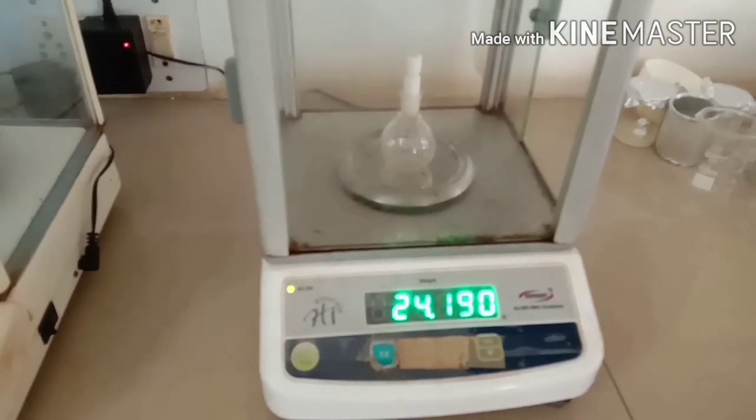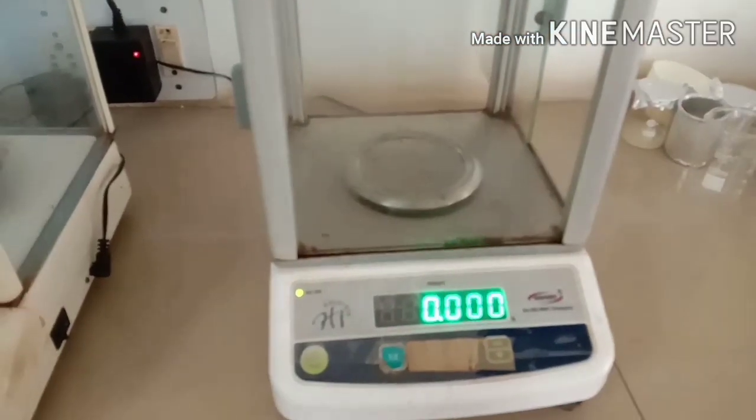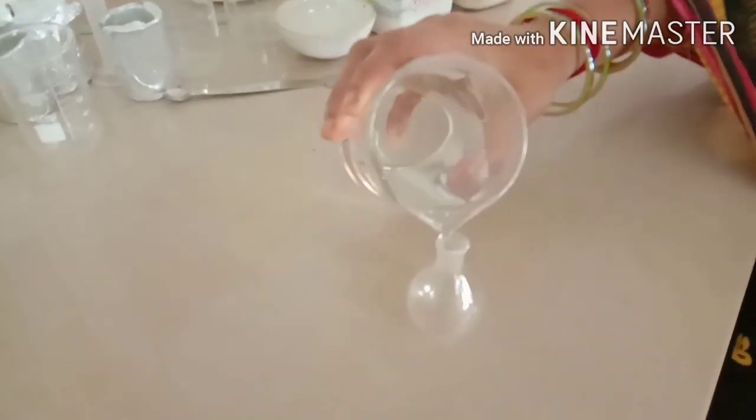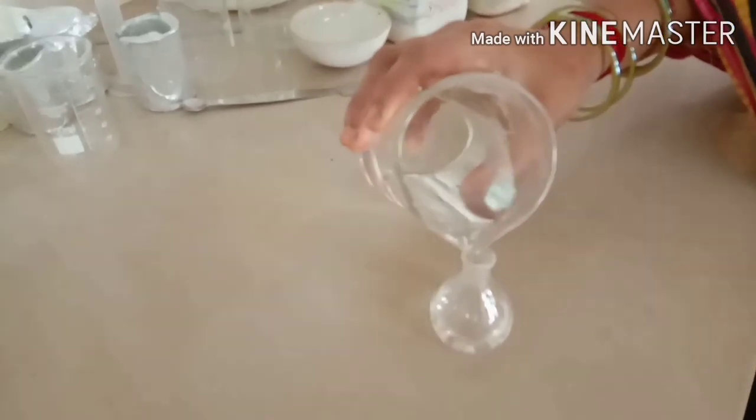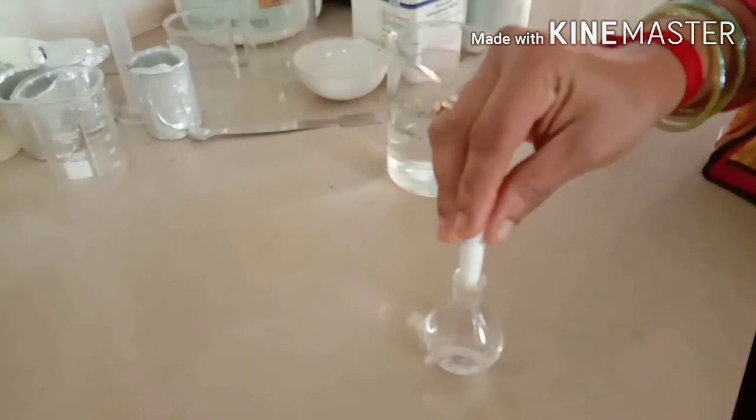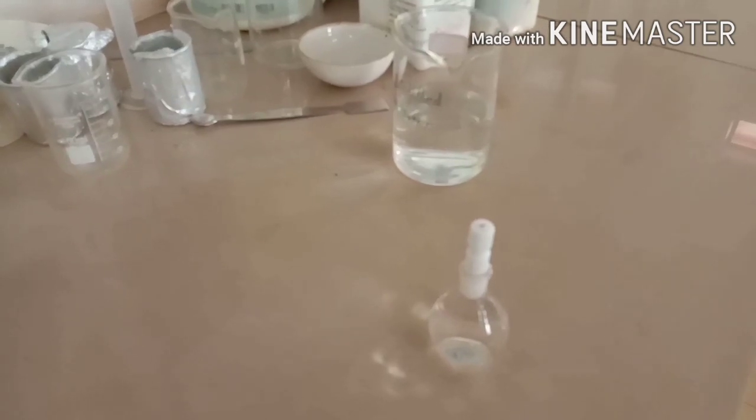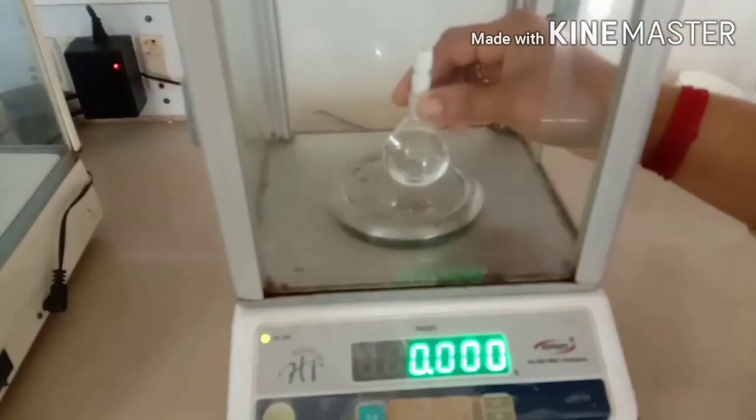The empty specific gravity bottle should be clean. Note down the weight as W1. Next, fill with distilled water. Then once again put the cork. Once again weigh, that is W2, that is weight of the specific gravity bottle plus water.